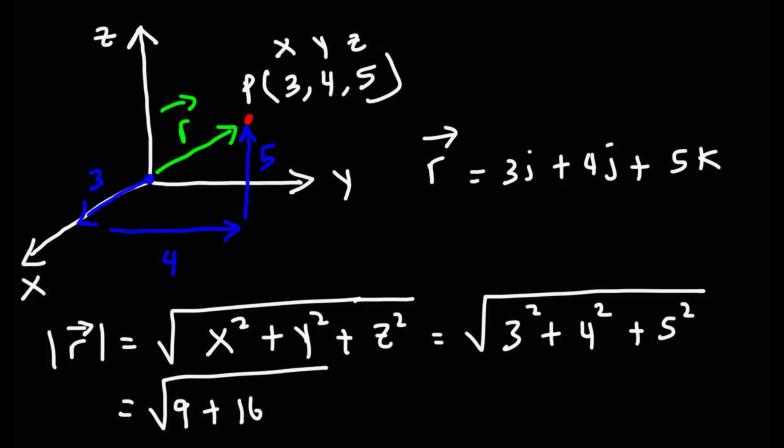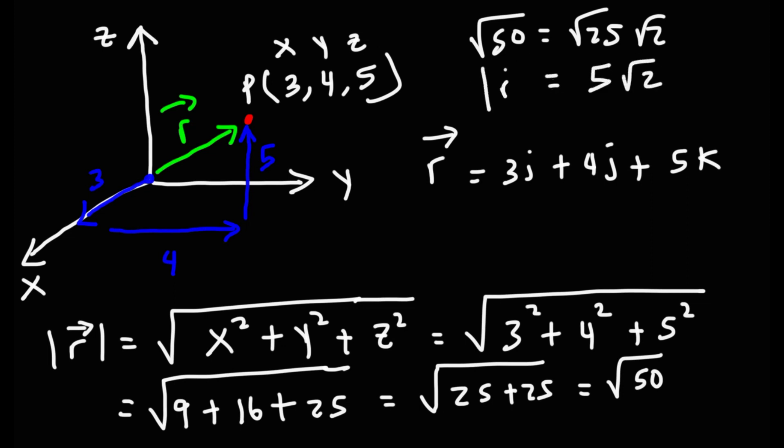3 squared is 9, 4 squared is 16, 5 squared is 25. 9 plus 16 is 25, 25 plus 25 is 50. So we have the square root of 50, which we can reduce that. 50 is 25 times 2, and the square root of 25 is 5. So this is the magnitude of the position vector, which is also the same as the length of the position vector. So that's how you could find the length of any vector really.